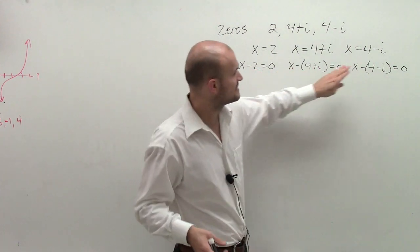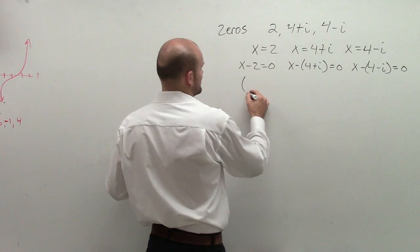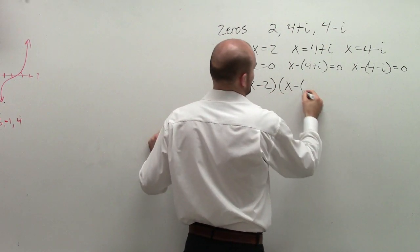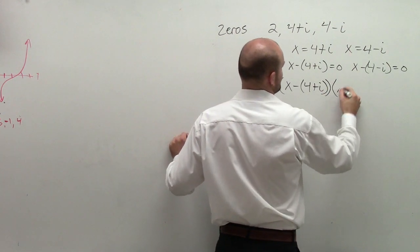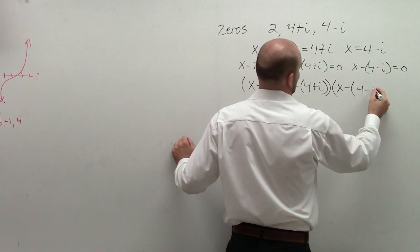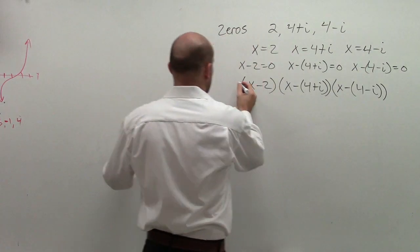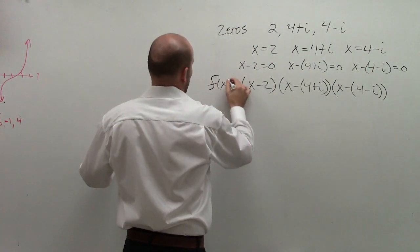So that means each one of these are now my factors: x minus 2 times x minus parentheses 4 plus i times x minus 4 minus i. So that's going to equal my function f of x.